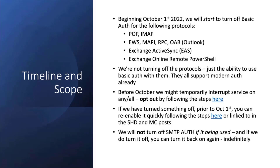We're not turning off the protocols themselves — just to be super clear on that. Active Sync is a great example: we're turning off basic auth for Exchange Active Sync, so iPhones and Androids will continue to work, they just can't use basic auth. We're turning off POP and IMAP — there are still a lot of people using them, primarily applications. We're also turning off the protocols Outlook uses: MAPI, RPC, Offline Address Book, and Exchange Web Services, which is used by many different applications.